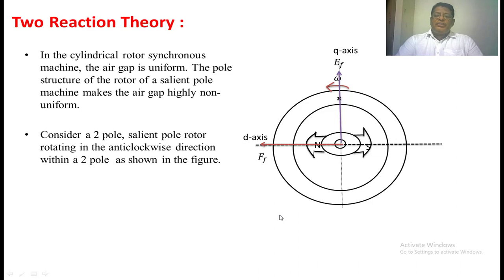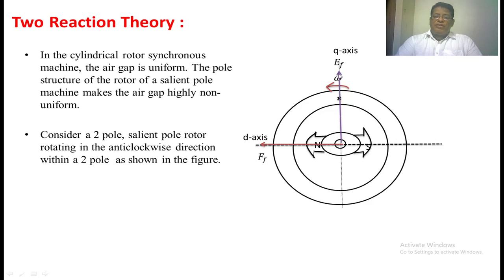If we connect a resistive load across the stator of a synchronous generator, the current is in phase with EF. So the armature MMF also lies only on the q-axis, and armature flux also lies on the q-axis.